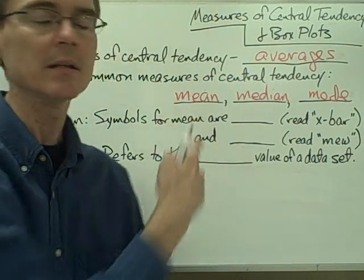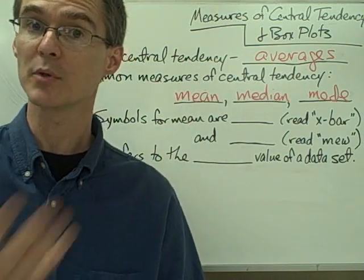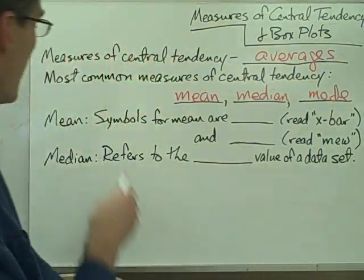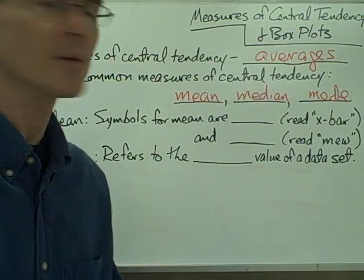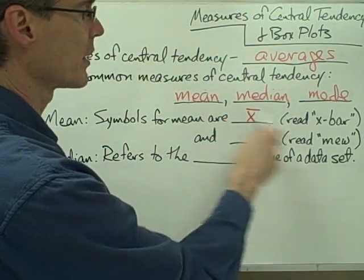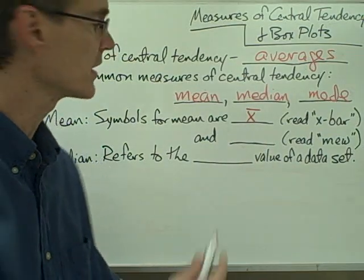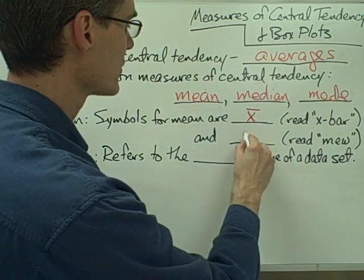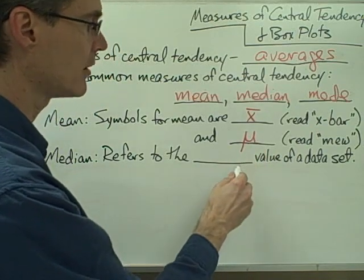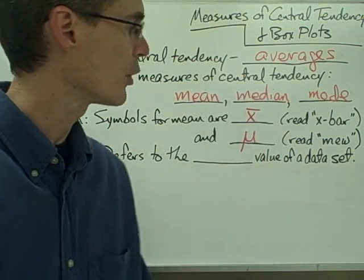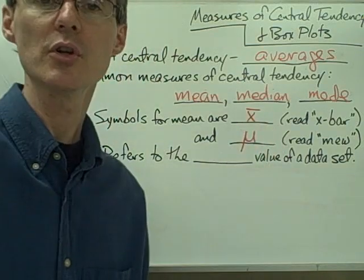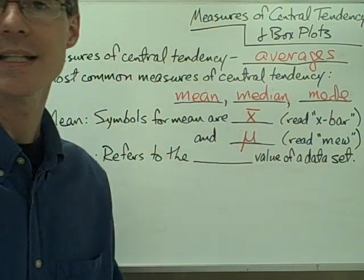So if you want to find the mean test score, for example, you would take all your test scores, add them up, and divide by however many tests you have. There are two symbols for the mean that we're going to see in this class. One is x-bar — just an x with a bar on top. The other looks like a lowercase u with a little tail on it; that's a lowercase Greek letter called mu. Anytime you see one of those symbols, you know you're talking about the mean of a data set.